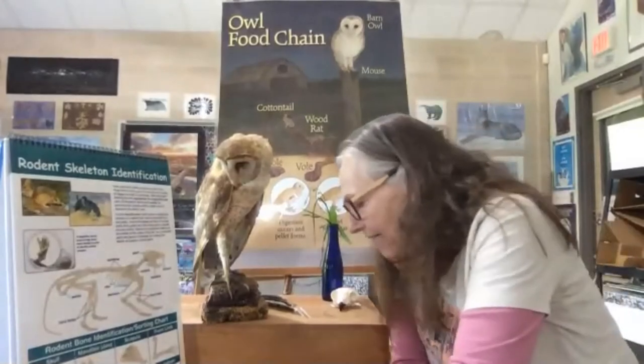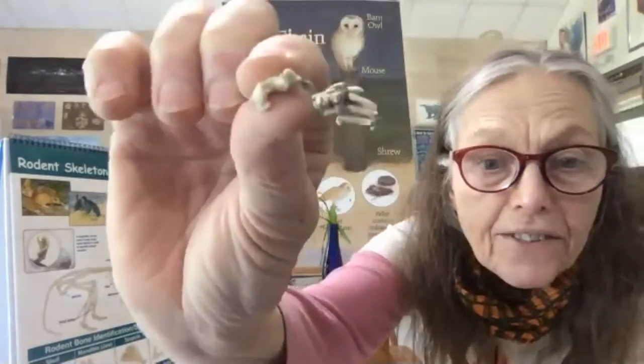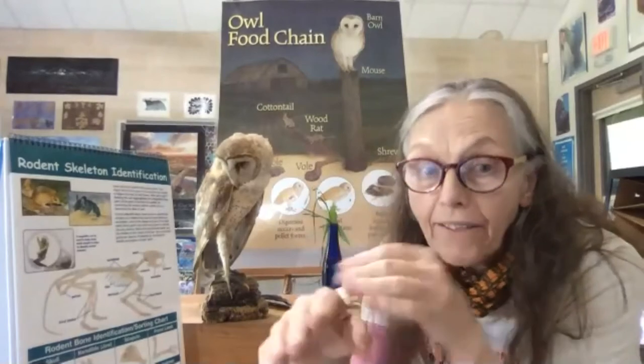We very rarely find moles. A mole has really unique shoulder structure and big claws for digging through the earth. In the case of the shrew: there's a plant, the insect ate the plant, the shrew ate the insect, then the owl ate the shrew. So the plant is the producer, the insect is the primary consumer, the shrew is the secondary consumer, and the owl is the tertiary consumer. Those are all different trophic levels.